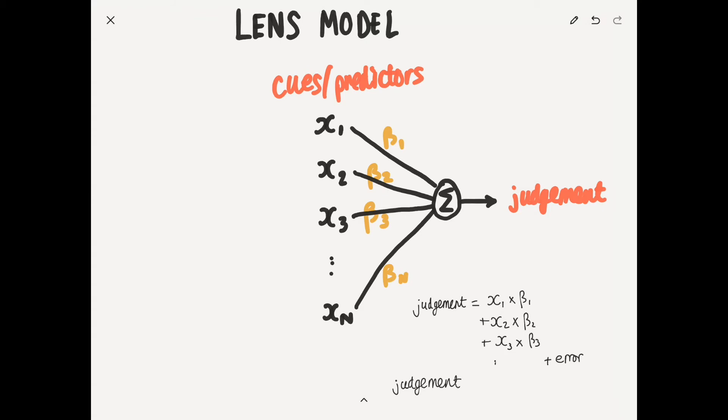Perhaps shorter. So we can say the judgment is made up of the sum of all of the predictor variables we have. So each one multiplied by the beta coefficient. And then again, we have our error.